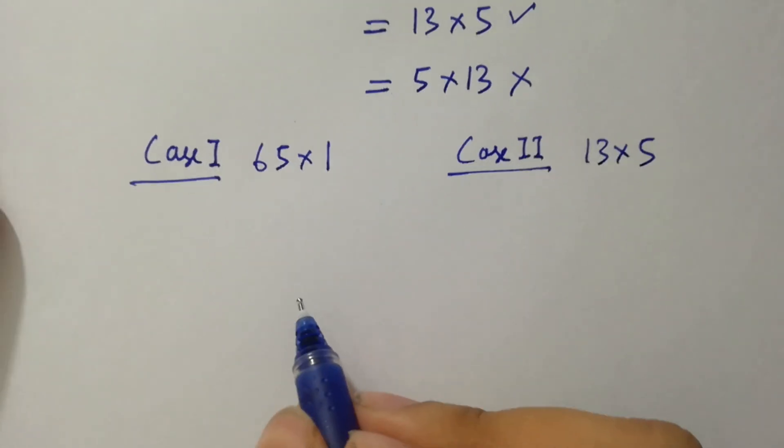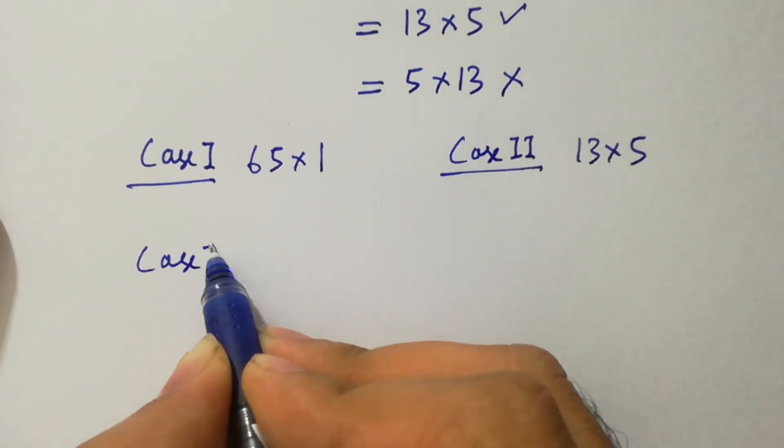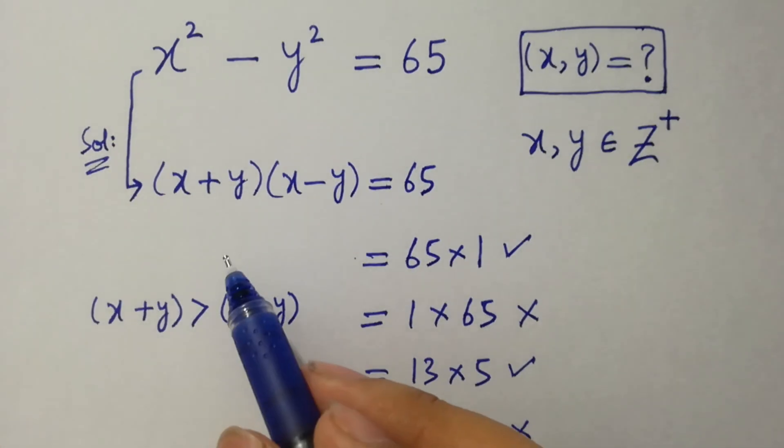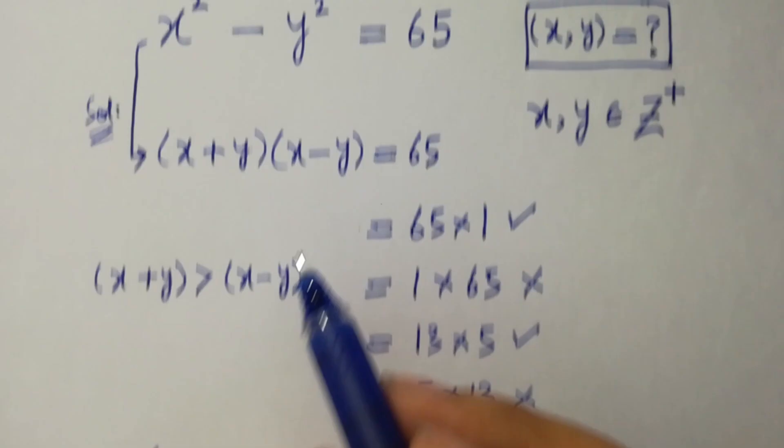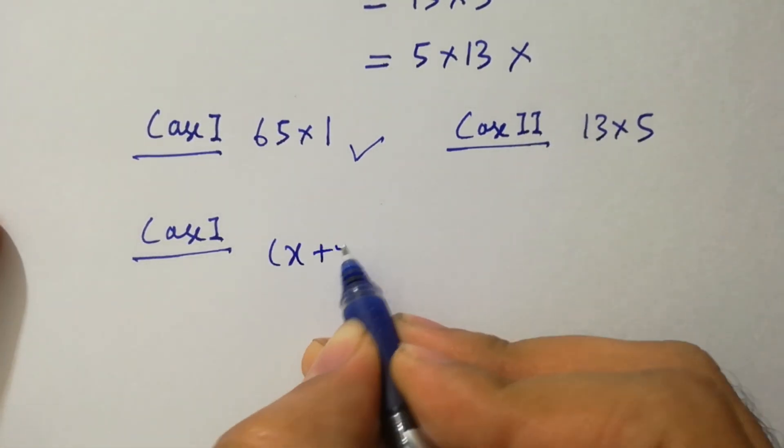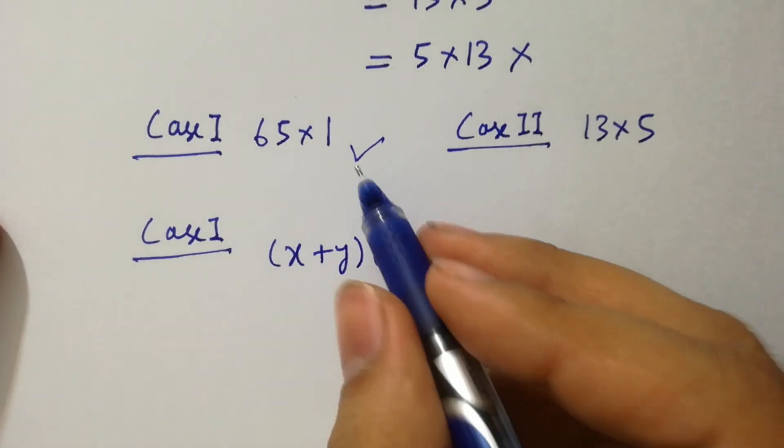First of all, take case first, which is 65 times 1. We have x plus y, x minus y equal to 65 times 1.